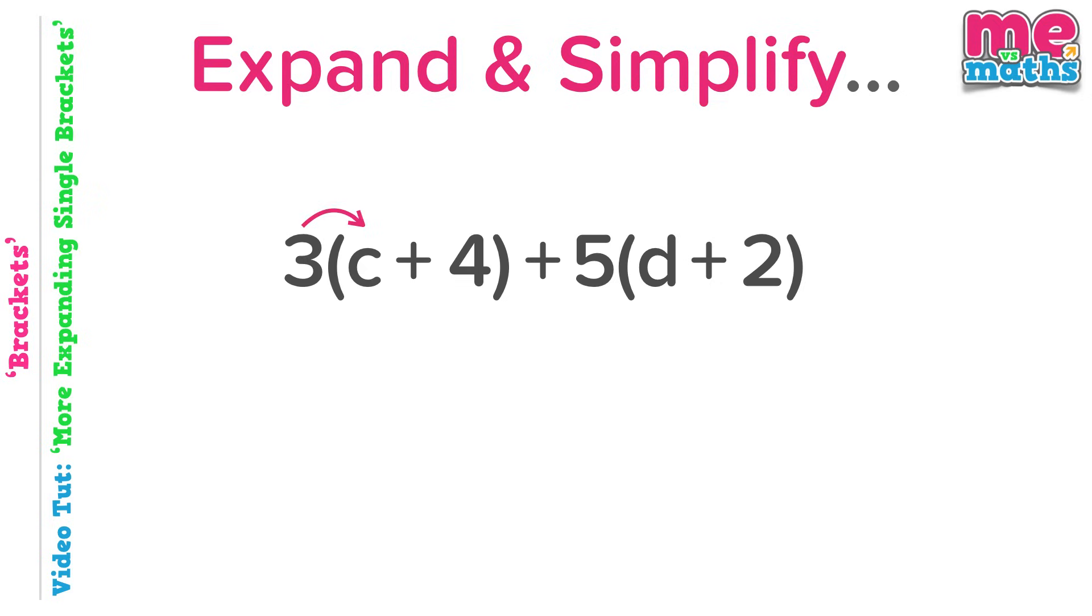Three times c is just 3c, and three times four is twelve or plus twelve. Next we'll look at the 5(d+2) part. Five times d is 5d, and five times two is ten or positive ten, so plus ten.